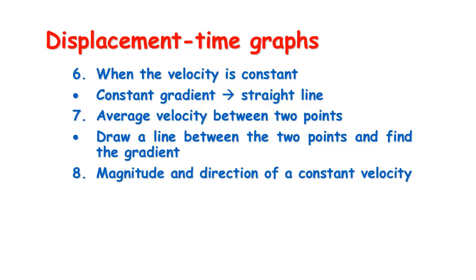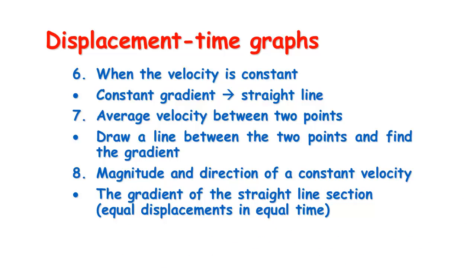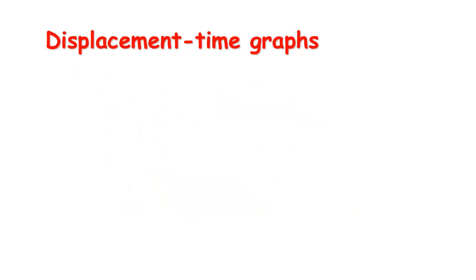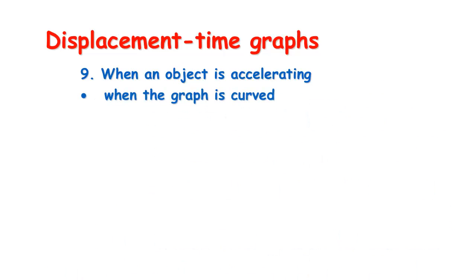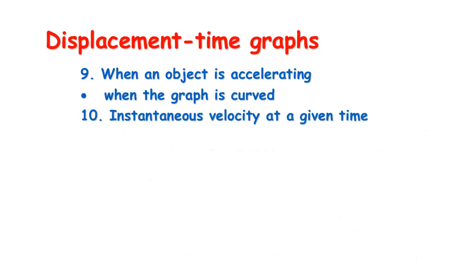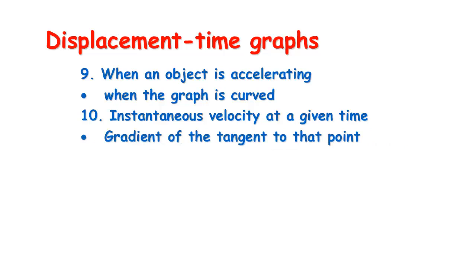We can also find the magnitude and direction of a constant velocity from a straight line section by finding its gradient. If it's not a constant velocity, the object is obviously accelerating, and the giveaway is a curve in the graph — it's covering different amounts of displacement over equal time intervals. If accelerating, you can find the instantaneous velocity at any given point by drawing a tangent to that point and finding the gradient of that tangent.